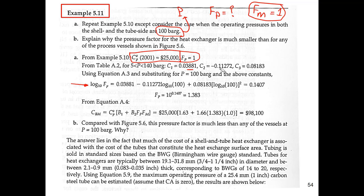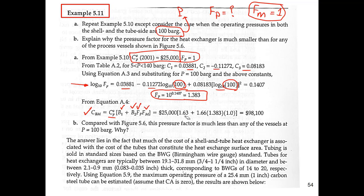We put C1, C2, C3 into the equation with pressure equal to 100 bar, and we find the pressure factor Fp = 1.38. Now in the bare module cost equation, we no longer use the reference condition zero superscript because it's not at one bar anymore. Using CP0 = 25,000, B1, B2, Fm, and Fp = 1.38, the bare module cost CBM comes out to $98,000.